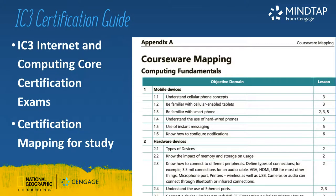IC3 Certification Guide. Approved by CertiPort, this book thoroughly prepares readers for success as they master the basic requirements for all three IC3 Internet and Computing Core Certification exams: Computing Fundamentals, Key Applications, and Living Online. IC3's Trusted Standard Guidelines detail the knowledge and skills that functional users of computer hardware, software, networks, and the Internet need. IC3 Certification Mapping at the back of the book pinpoints where students can study each feature.